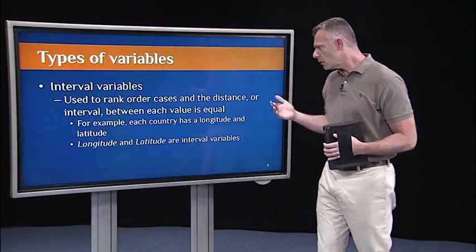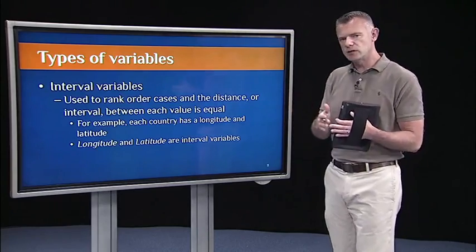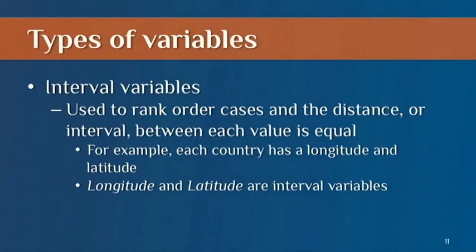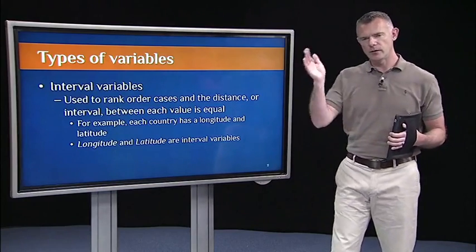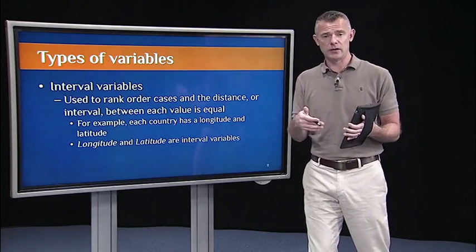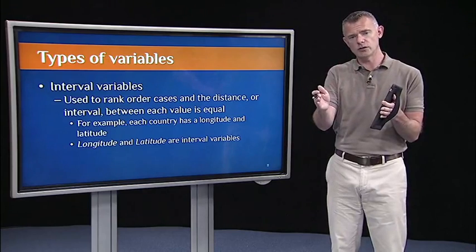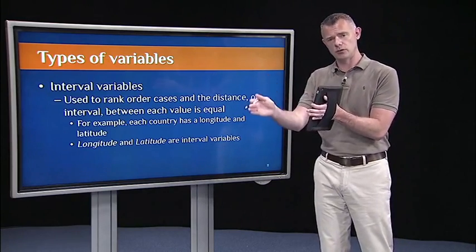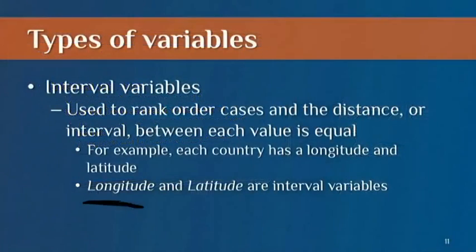Interval variables are also used to rank order cases. So we can order cases from top to bottom. But in this case, the distance or interval between each value is equal. That's why it's called an interval variable. So again, sticking with this theme of countries of origin for Coursera students. Each country, if we look at the globe, has a longitude and a latitude. And I can compare the longitude and latitude of each country. And the distance from, say, zero longitude to 100 longitude is the same as the distance from 100 longitude to 200 longitude. They're equal intervals. They're equal spaces. So longitude and latitude are equal interval variables.